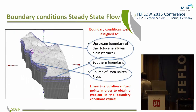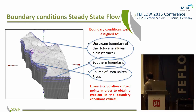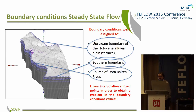As a first approach, we performed a steady-state flow model. We introduced three different boundary conditions: at the upstream boundary, at the southern boundary, and for the river. Each boundary condition is a linear interpolation at fixed points in order to obtain a gradient in the boundary condition values.